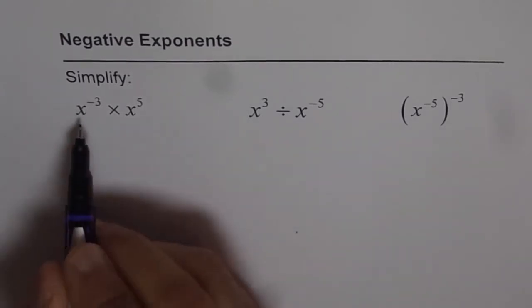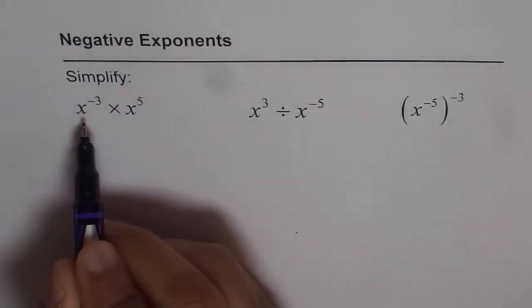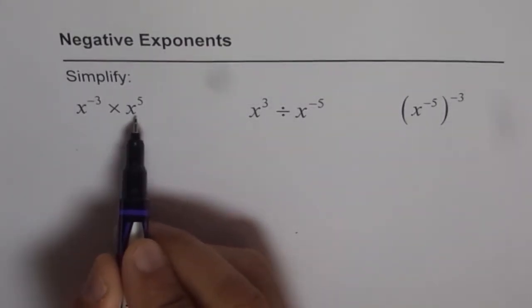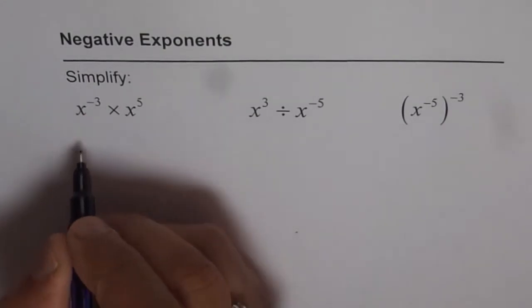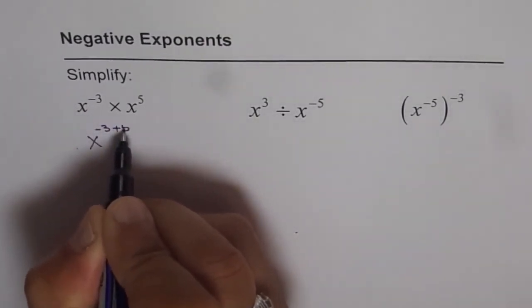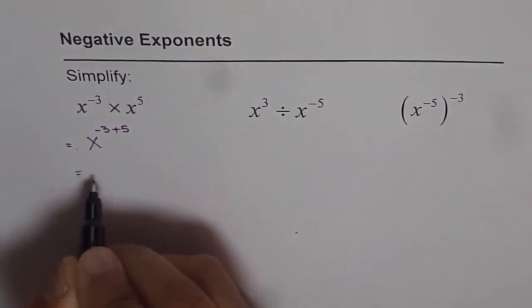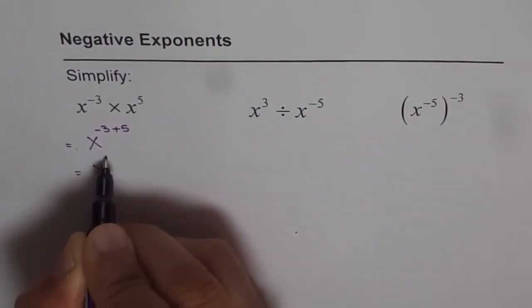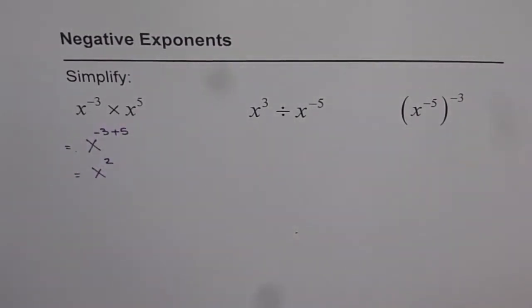Now, when you multiply two terms with the same base, you always add their exponents. So what we get here is x to the power of -3 plus 5, and that equals x to the power of 2, or x squared. So that is the answer.